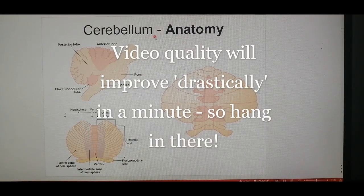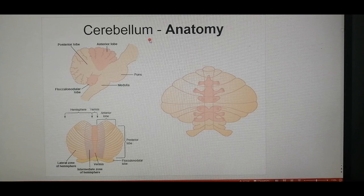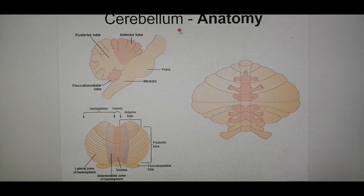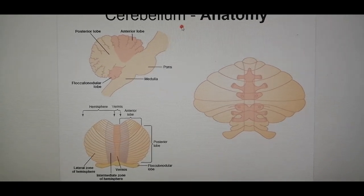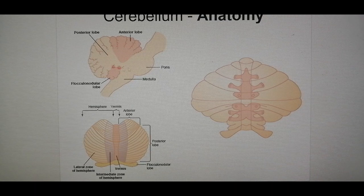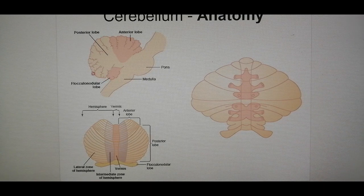This is the anatomy of the cerebellum — this is physiological or functional anatomy, not an exclusive anatomy lecture. This diagram from Guyton shows the position of the cerebellum, often nicknamed the hindbrain, positioned posterior to the pons. This is the brainstem here, this is the pons, this is the medulla, and this whole area here is the cerebellum.